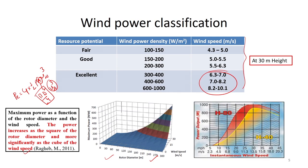A figure shows power output versus instantaneous wind speed at two different heights from the ground. The first curve is at 40 meters and the second is at 80 meters. As you install the wind turbine at higher altitude, you get higher energy conversion and more energy harvesting.